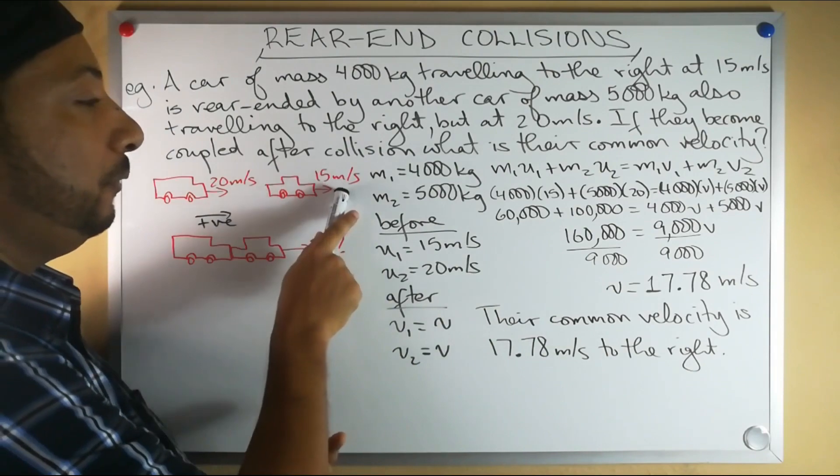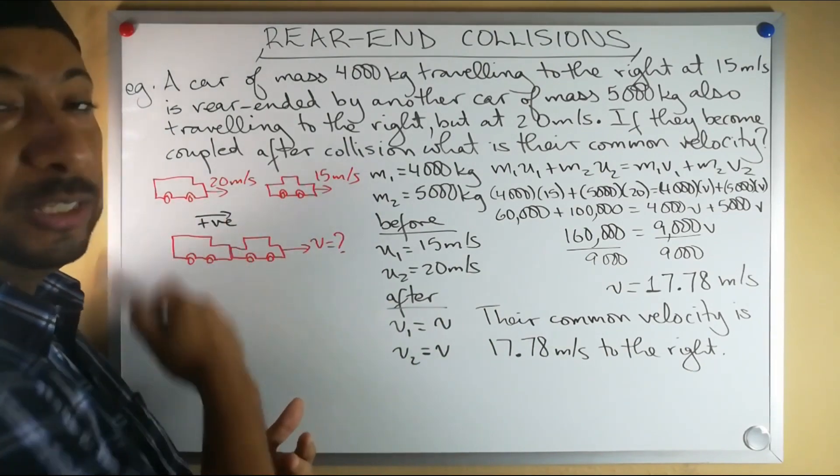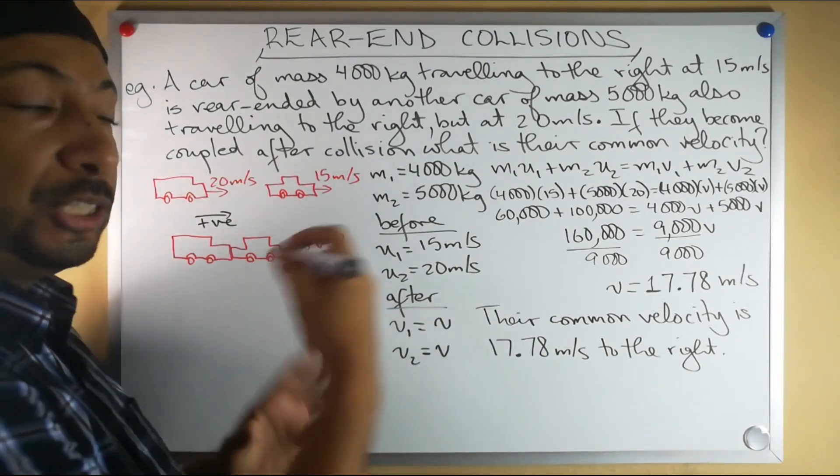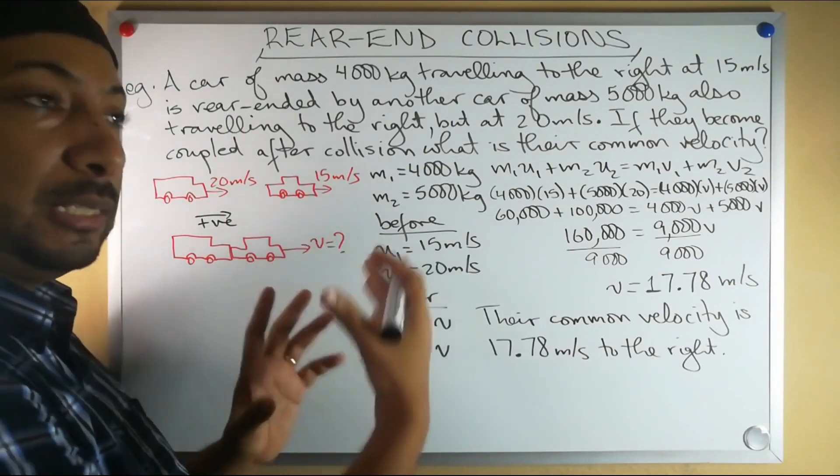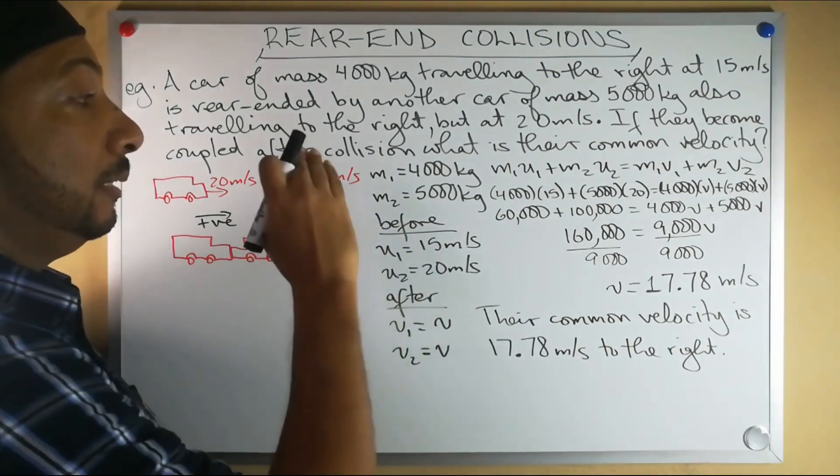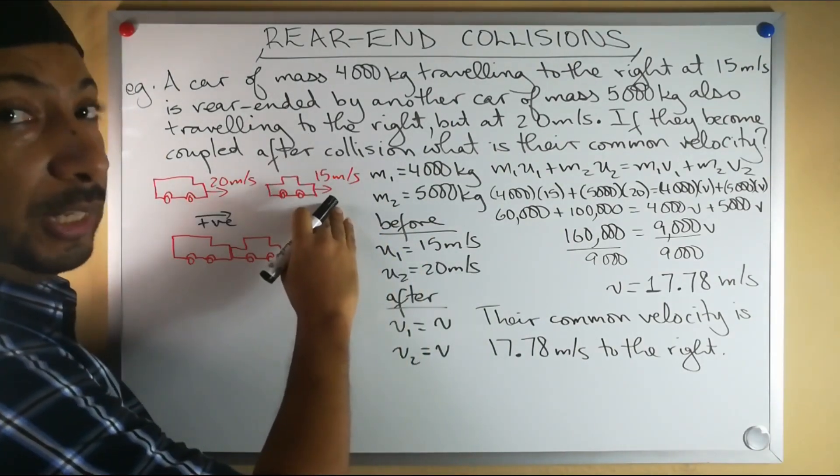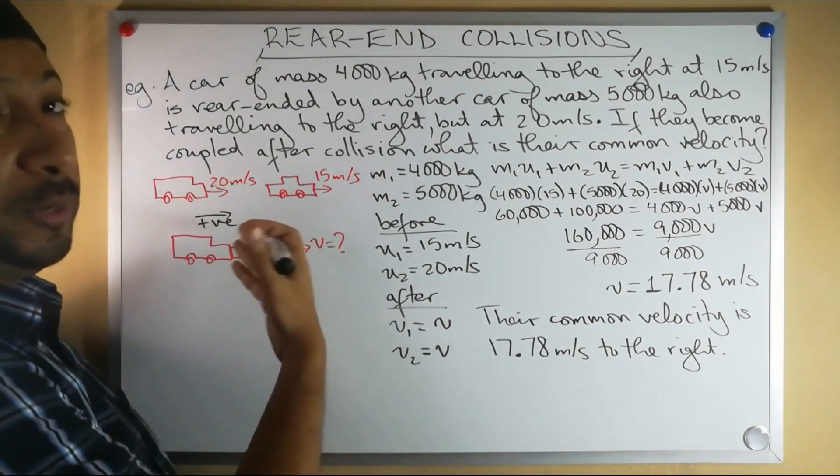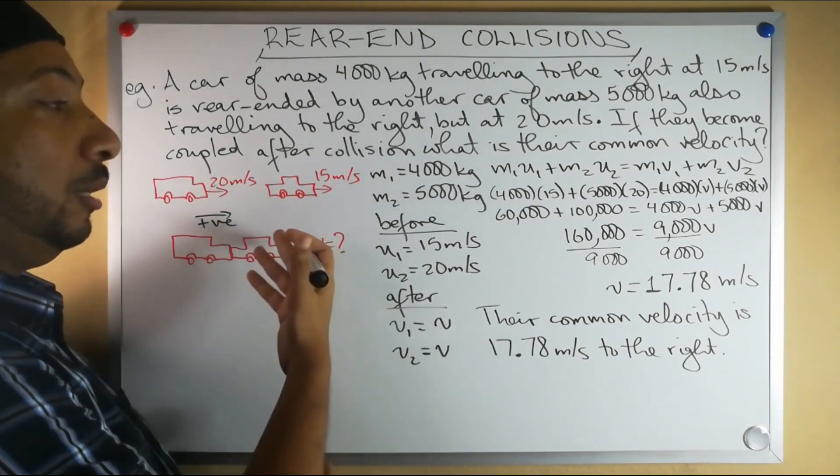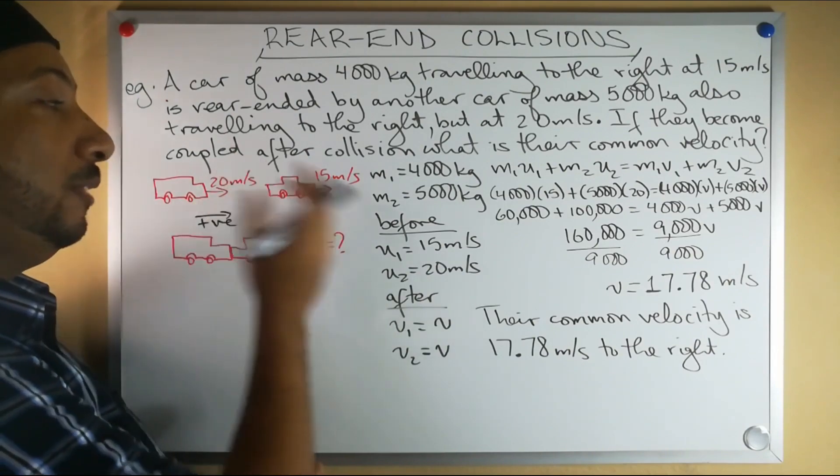They're gonna share and gain some of that velocity together. This small car will gain velocity and that large truck is going to lose some of its velocity. So when we work this out we should expect to get a number between 15 and 20.